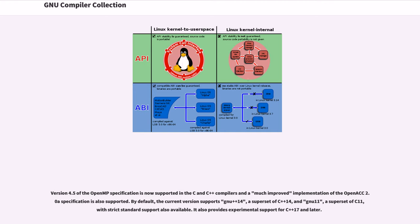Version 4.5 of the OpenMP specification is now supported in the C and C++ compilers, and a much improved implementation of the OpenACC 2.0a specification is also supported. By default, the current version supports GNU++14, a superset of C++14, and GNU11, a superset of C11, with strict standard support also available. It also provides experimental support for C++17 and later.